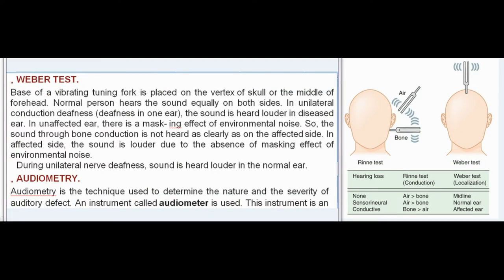Weber Test: The base of a vibrating tuning fork is placed on the vertex of the skull or the middle of the forehead. A normal person hears the sound equally on both sides. In unilateral conduction deafness (deafness in one ear), the sound is heard louder in the diseased ear because in the unaffected ear there is a masking effect of environmental noise, so sound through bone conduction is not heard as clearly as on the affected side. In unilateral nerve deafness, sound is heard louder in the normal ear.